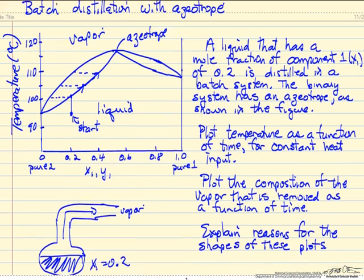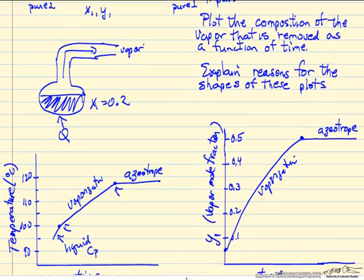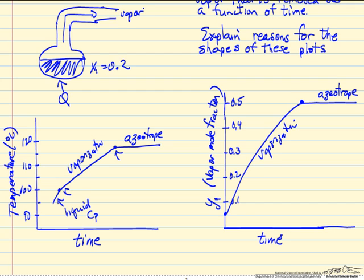So we're carrying out batch distillation on a system with an azeotrope. The boiling temperature will change until we reach the azeotrope and then it will stay constant, and likewise the composition of vapor will change until we reach the azeotrope.